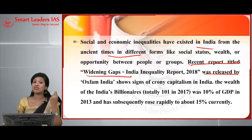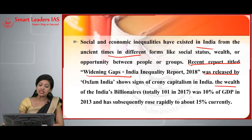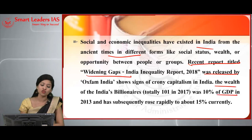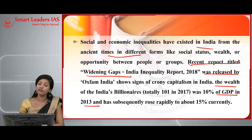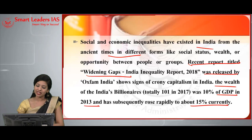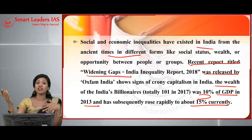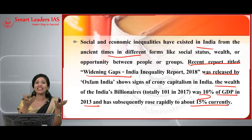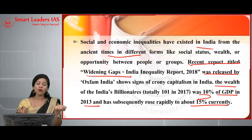The wealth of India's billionaires was 10% of GDP in 2013 and has subsequently increased to about 15% currently — a huge increase. This shows a widening inequality between the rich and the poor, which is one of the biggest reasons a country is not developing. According to the question, the next part of your answer can address why inequality exists in different sectors.